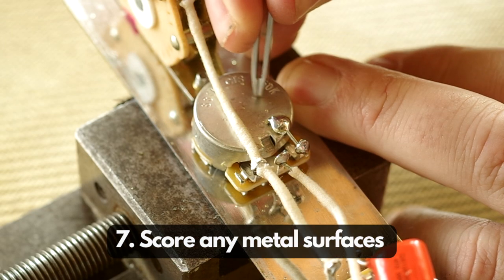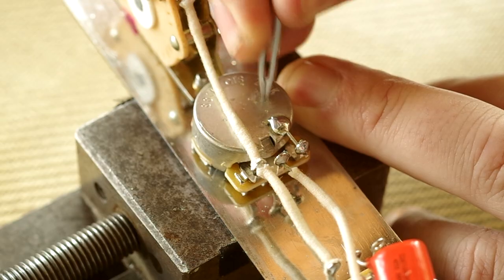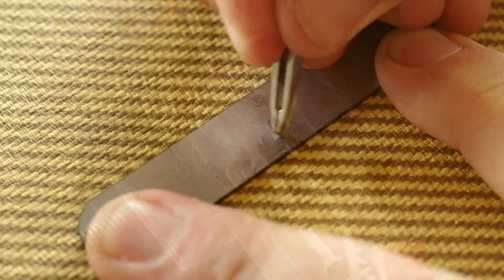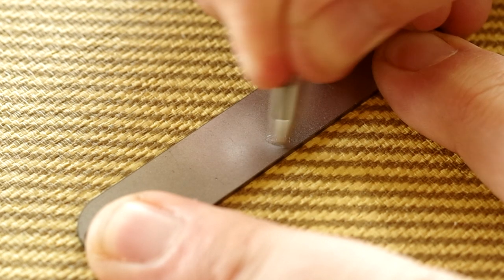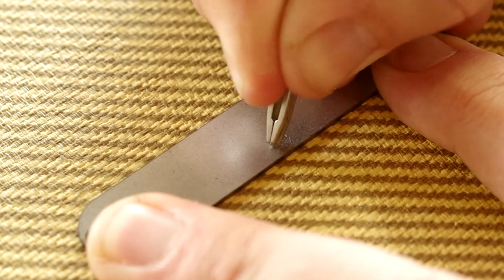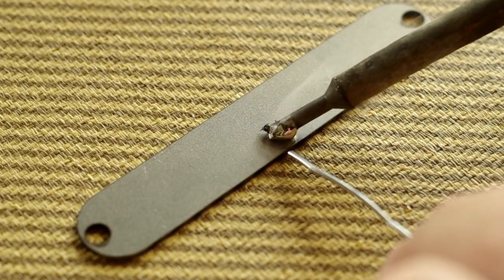My tip number seven is to score any metal surfaces that you're about to solder. I just use something metal to score in a circular fashion. This helps the solder stick to the metal surface, especially on something as heavy as a base plate. You really need to score quite heavily in, and then use the highest heat setting on your soldering iron to get the solder to stick.